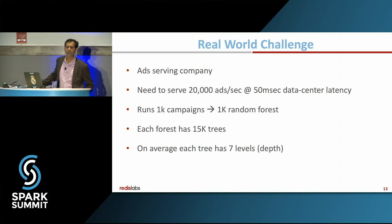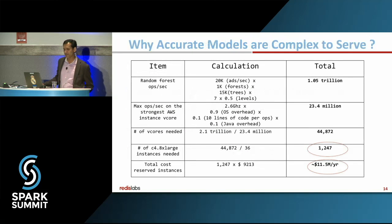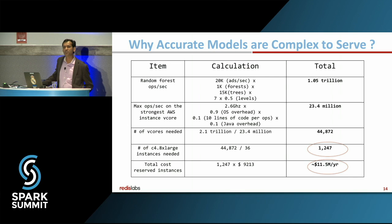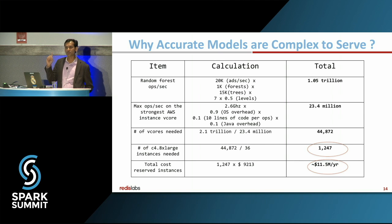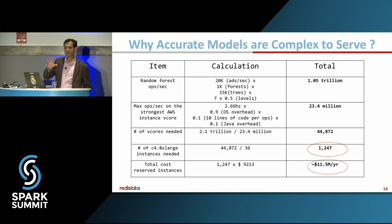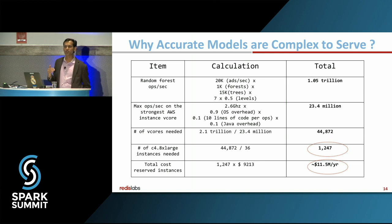Here is a leading ad-serving company with massive amounts of data to serve: 20,000 ads per second at very low latency. It runs 1,000 campaigns — about 1,000 random forest algorithms — and each forest has 15,000 trees, which are seven layers deep. If you do the math, that leads to over 2.5 trillion operations per second. Applying the highest-performing virtual core on an AWS instance, you're talking about 23 million virtual cores required. That translates to about 1,247 C4 instances — the largest AWS instance — costing about $11 million a year. Clearly the economics don't work for an ad-serving company.